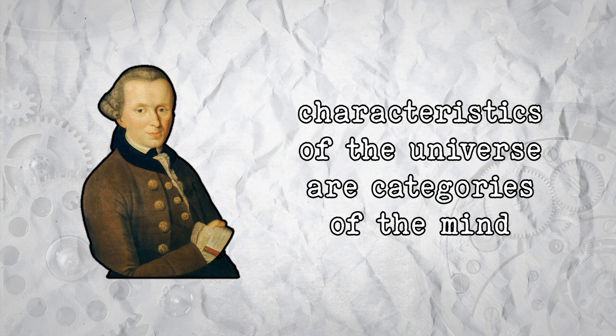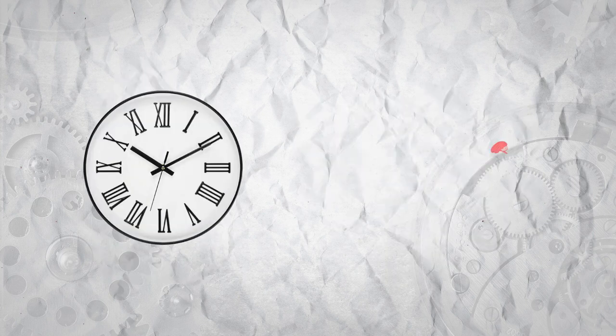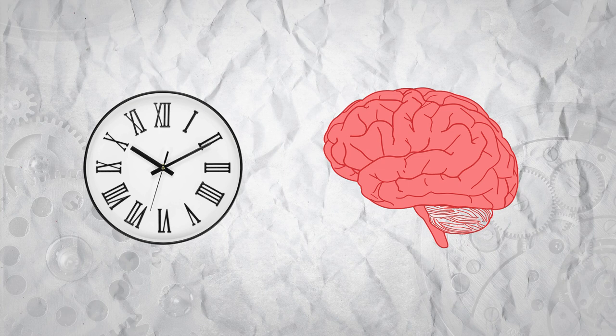For Kant, the supposed objective characteristics of the universe, like space and time, are not really characteristics of the universe, but rather categories of the mind that allow us to organize the universe into its spatial and temporal dimensions. In other words, time is dependent on consciousness. Without consciousness to structure the universe with its categories, there would be no such thing as time in the universe at all.